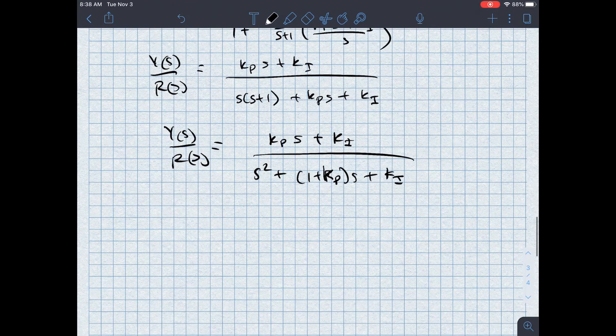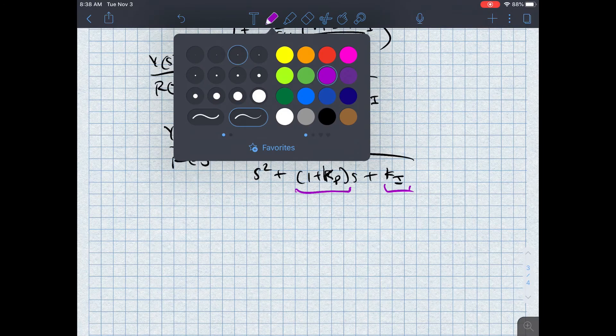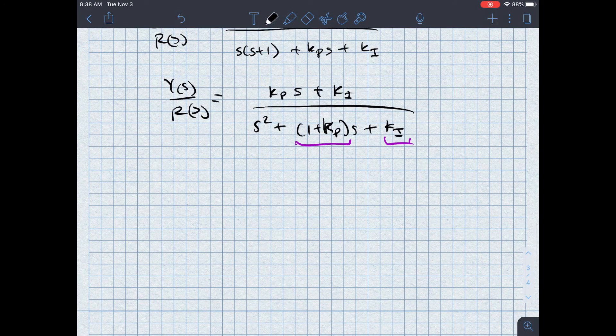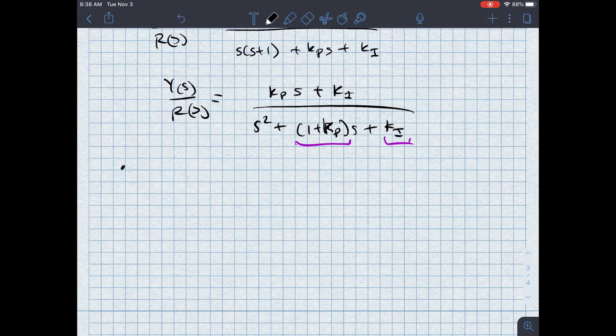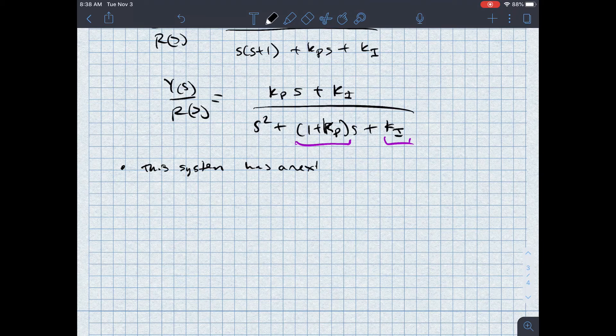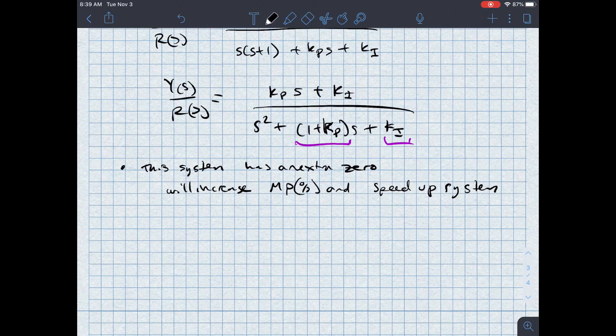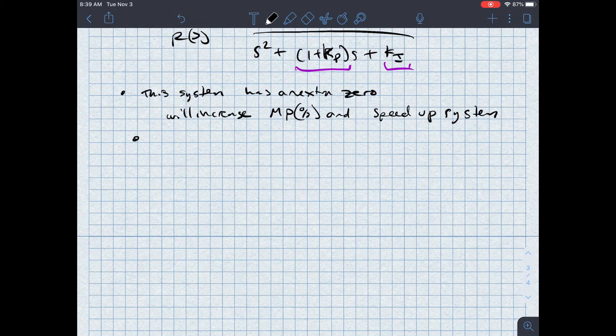So the coefficients I'm going to be comparing here are the one plus KP and the KI. Those are what I'm going to be comparing to my normal system. Now, before I think about this, the one thing I want to note is this system, because I have KPS plus KI in the numerator, has an extra zero. It's got an extra zero. And so what this will do is it will increase MP percent and will speed up the system. It just depends on where that zero actually is. Let's go ahead and ignore the zero for now.